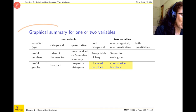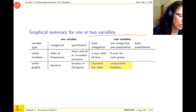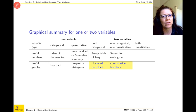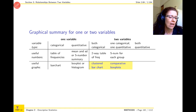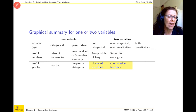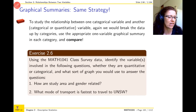For graphical summaries of two variables, it depends on their type. If both are categorical — for example sex versus highest level of study, or sex and study area — you use a clustered bar chart. If one is categorical and the other is quantitative — sex and income — you use comparative box plots, one income box plot for male and one for female.